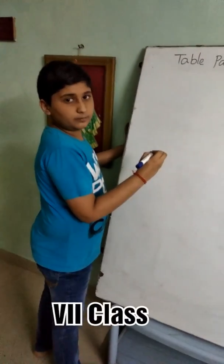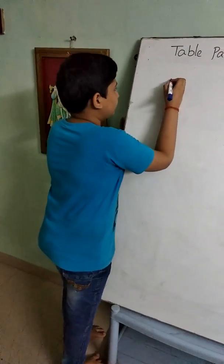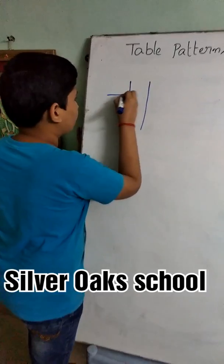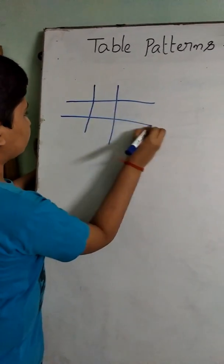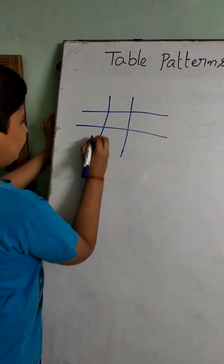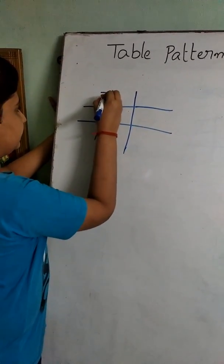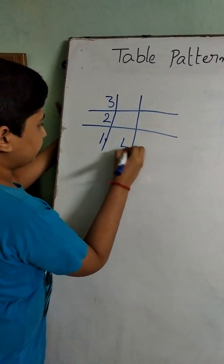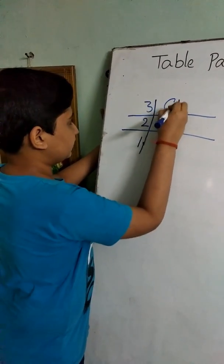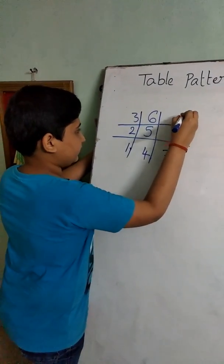Now we will discuss the tables that is 3 and 6. We should draw 2 vertical lines and 2 horizontal lines. And we should write 1 here and 2 here, 3 here and 4 here, 5 here, 6 here, 7 here and 8 here and 9 here.